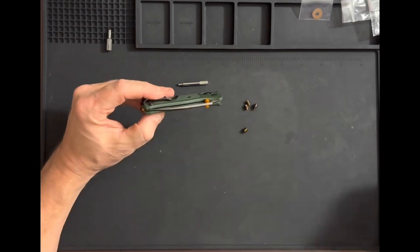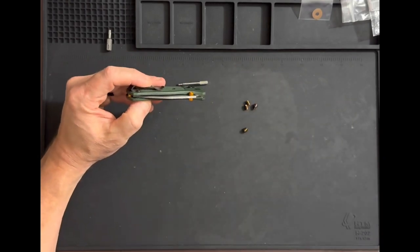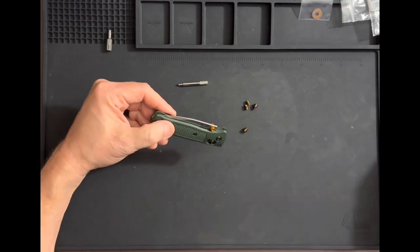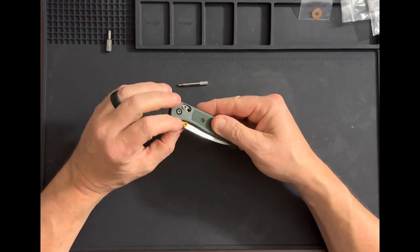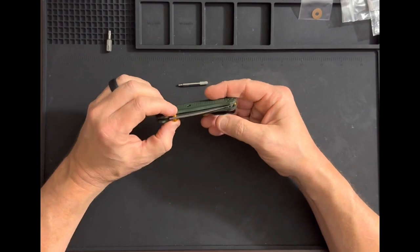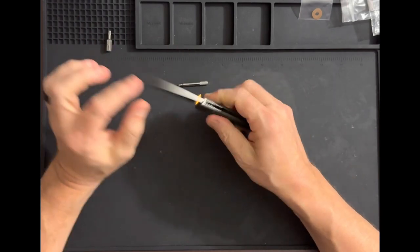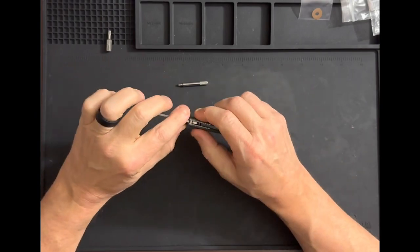This model has CPM S30V in Highland green. As you can see, it came with these thumb studs and back spacers. I assume they wanted to be copper, but they look very orangey.